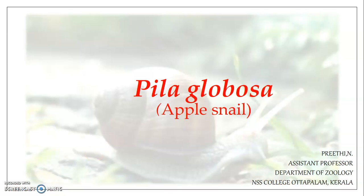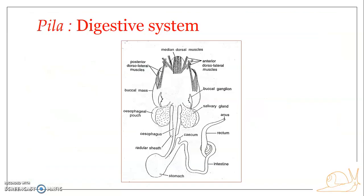Hello everyone, welcome back. In this presentation we'll be continuing with the digestive system of Pila globosa, the apple snail. We have already seen the alimentary canal. The digestive system is composed of the alimentary canal and the digestive glands. In the previous presentation we looked in detail at the structure and parts of the alimentary canal. Here we are going to deal with the digestive glands as well as the process of digestion.